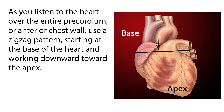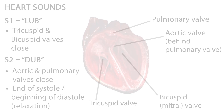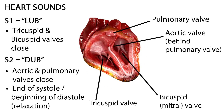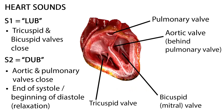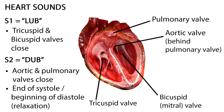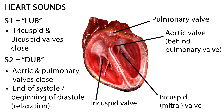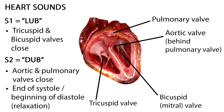As you listen to the heart over the entire precordium, or anterior chest wall, use a zigzag pattern, starting at the base of the heart and working downward toward the apex. Normal heart sounds, S1 and S2, are caused by events in the cardiac cycle. As blood flows from the atria to the ventricles, it goes through the tricuspid and bicuspid valves. These valves then snap shut, making the first heart sound, or S1. This is the lub in lub-dub.